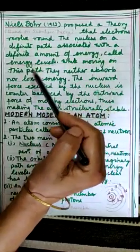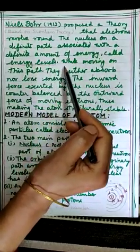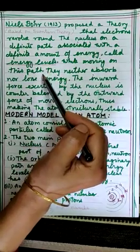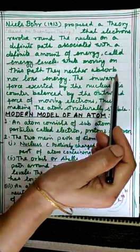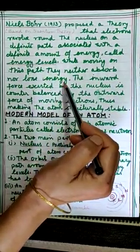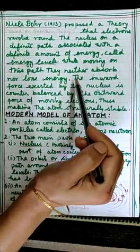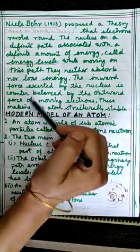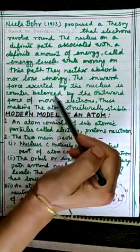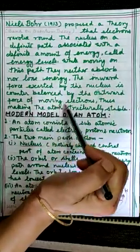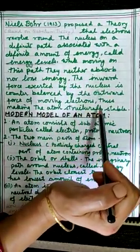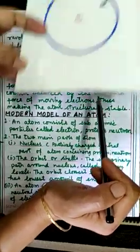He proposed that electrons do not revolve anywhere around the nucleus but on a definite path associated with a definite amount of energy called energy levels. While moving on these energy levels, they neither absorb energy nor lose energy. The inward force exerted by the nucleus is counterbalanced by the outward force of the moving electron, thus making the atom structurally stable.